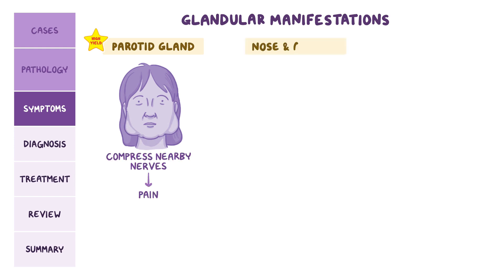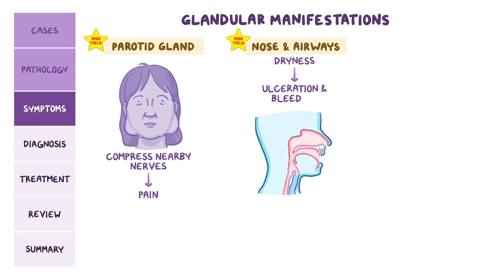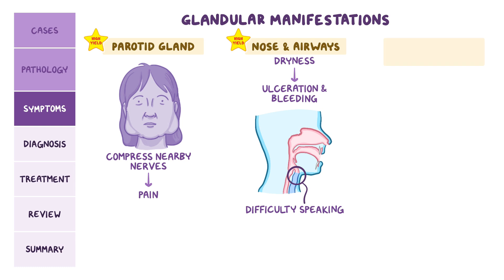In the nose and airways, Sjogren's syndrome causes dryness that leads to ulceration and bleeding. And if this affects the larynx, it can lead to difficulty speaking. Some people can also experience dryness of the skin and vagina, which might cause dyspareunia or painful intercourse.